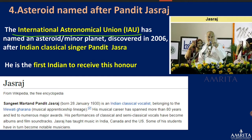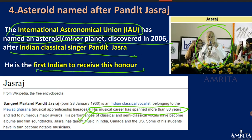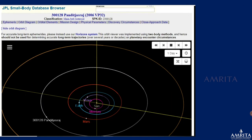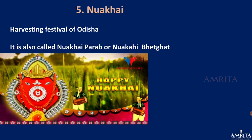Next, an asteroid has been named after Pandit Jasraj. The International Astronomical Union named a minor planet discovered in 2006 after the Indian classical singer Pandit Jasraj. He is the first Indian to receive this honor. His musical career spanned more than 80 years and he received numerous musical awards. This asteroid is located between Mars and Jupiter.